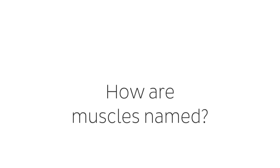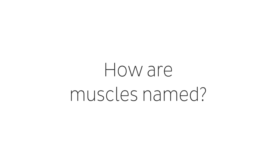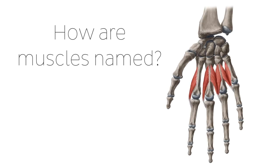Hello everyone, this is João from Kenhub and in this tutorial we will be discussing how names of muscles are derived. Studying anatomy can be quite challenging, from remembering the names of muscles to knowing their insertion, origin, innervation, and function. It is sometimes difficult just to remember the name of a muscle, let alone all the other structures associated with it. In this tutorial we will discuss how muscles get their names, in order to help make it easier for you to identify and remember them.